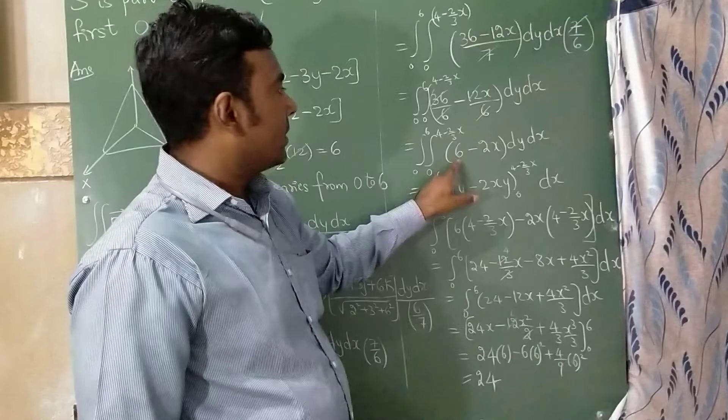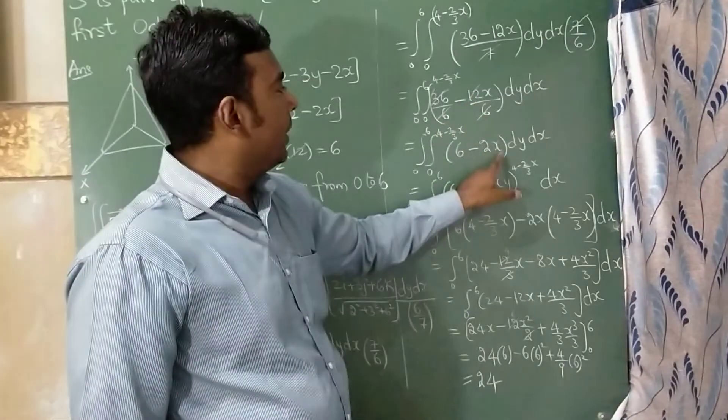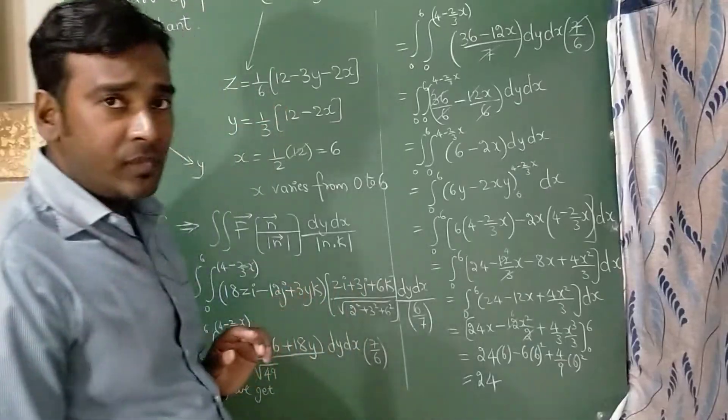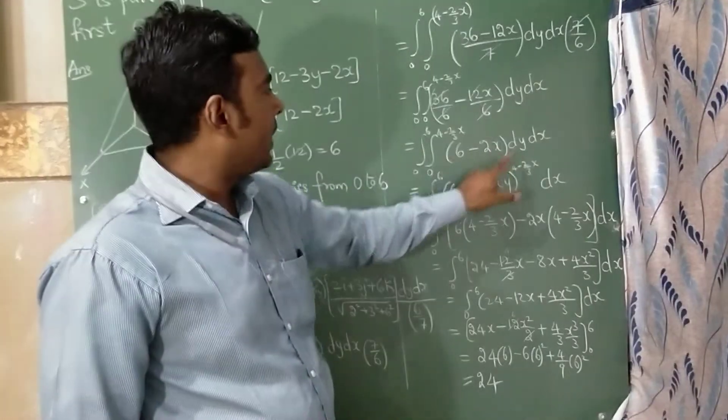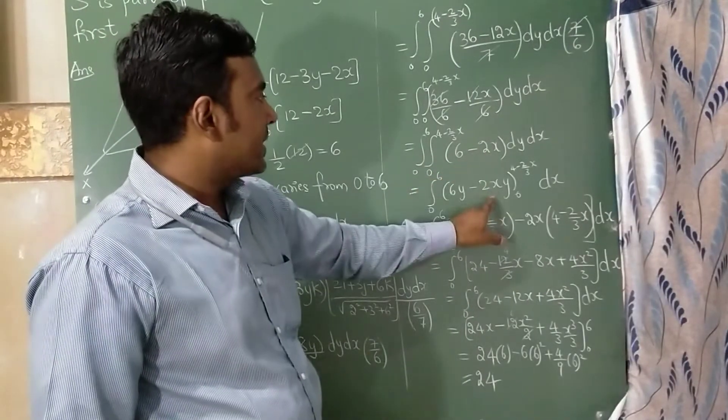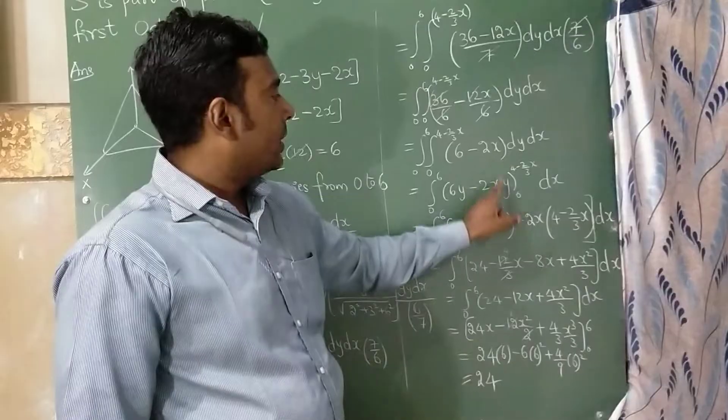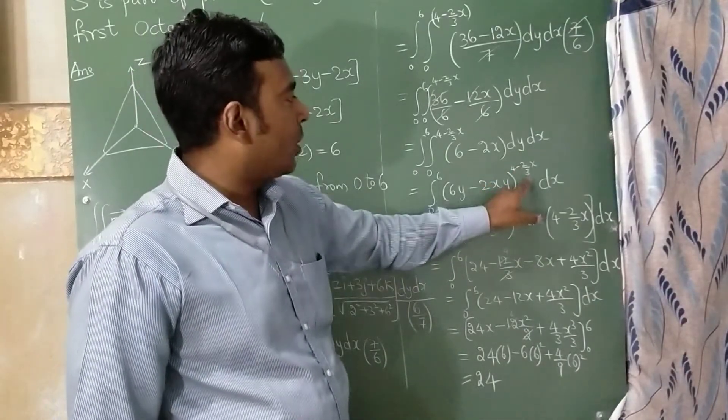Now I am going to integrate with respect to dy. Integration of this is 6y minus 2x as it is. Integration of this will be y here. Now range is 0 to 4 minus 2 upon 3 x.